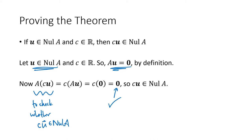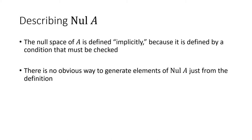We've proved all three pieces of this theorem, proving that the null space is in fact a space — not just a set of vectors, but an actual space. One of the problems with understanding the null space is that the definition is what we sometimes call an implicit definition. It gives us a condition to check for whether a vector is in the null space. If I hand you a vector, you can check it. But if I ask you to give me a vector in the null space, there's no obvious way to generate one just from this definition.